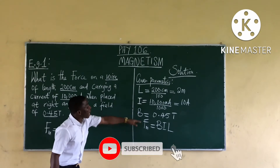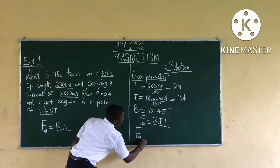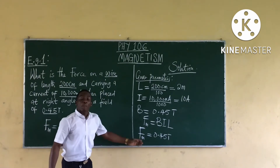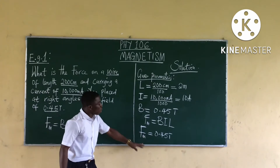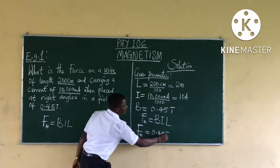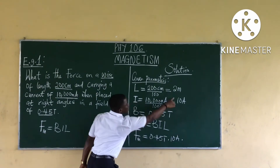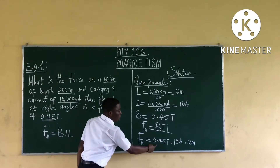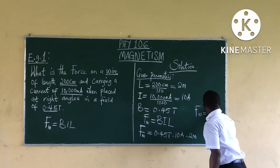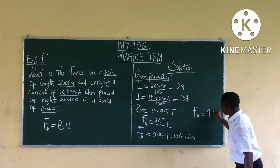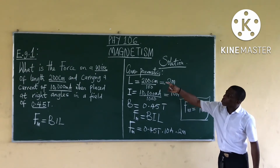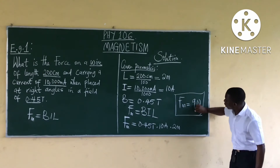Calculating: 0.45 × 10 × 2 = 9. The unit of magnetic force is Newton, so the force on this wire is 9 Newtons.